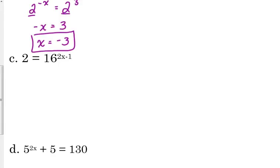2 is equal to 16 to the 2x minus 1. We're going to use base 2 again. 16 is 2 to the 4th. Power to the power. We've got to distribute it this time. So 4 times 2x is 8x. 4 times negative 1 is negative 4. We've got the same bases.